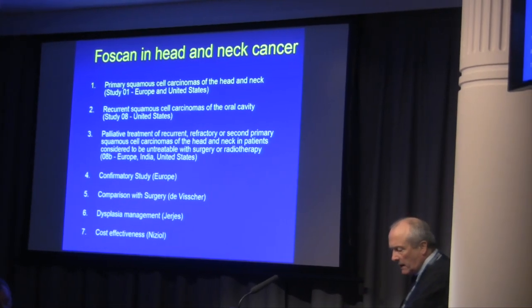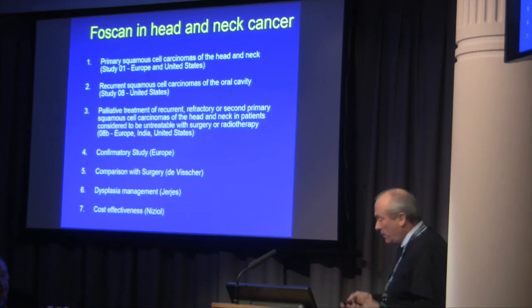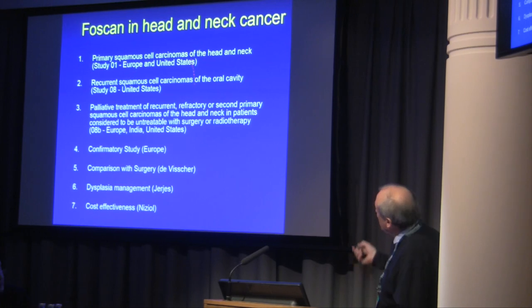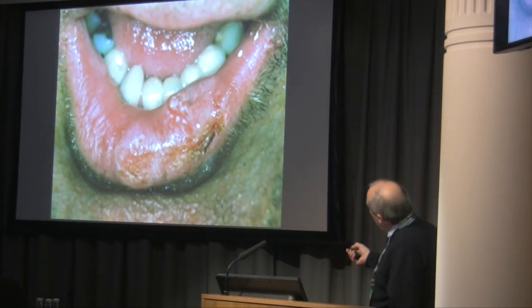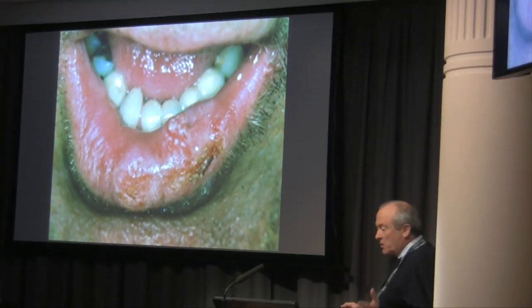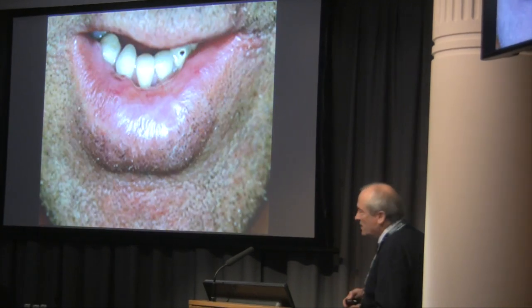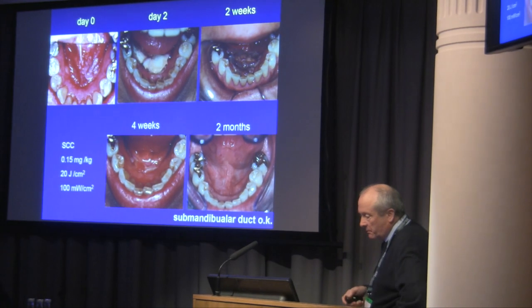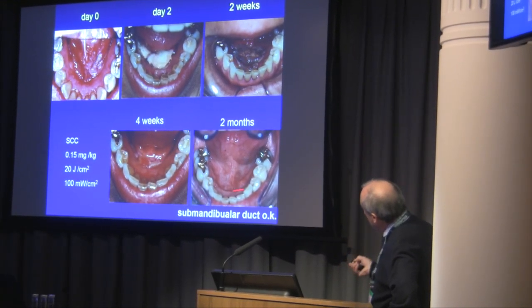I fell out of love with Photofrin for a variety of reasons, and we started working with Foscan, which is a powerful photosensitiser — in some respects too powerful. In early disease, this is an early squamous cell carcinoma of the lip. With PDT: minimal scarring and a good result. In the floor of the mouth, these early lesions — it's absolutely superb.